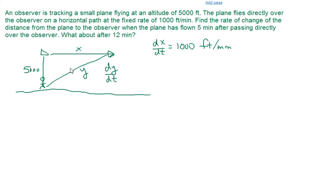We have a right triangle here. So we can use the Pythagorean theorem to relate y and x. So our formula to relate the variables is going to be y² = 5,000² + x².